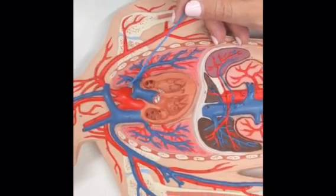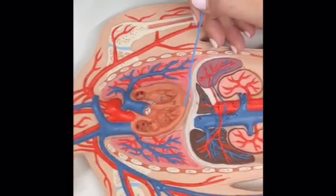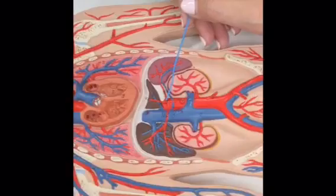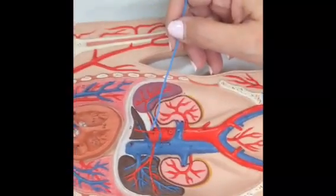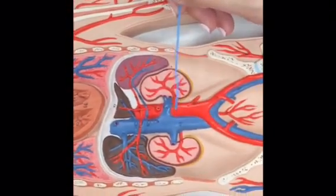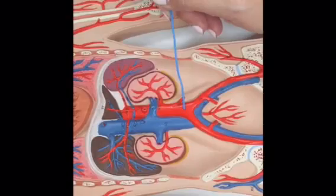You won't be able to see it on this model, but it's running behind the heart. Once you get down here, then you have the abdominal aorta. So all of this is the abdominal aorta.